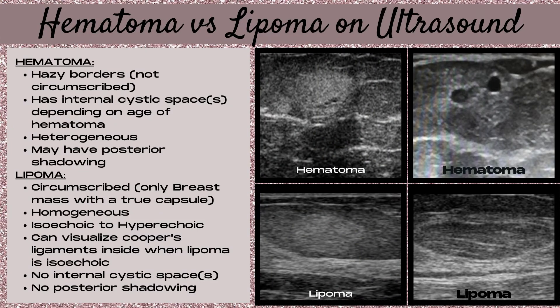Distinguishing a hematoma versus a lipoma on ultrasound: a hematoma will have hazy, non-circumscribed borders, often internal cystic spaces, heterogeneous texture, and may have posterior shadowing. A lipoma, by contrast, is circumscribed — it's the only breast mass with a true capsule. A lipoma is homogeneous in echo texture, isoechoic to hyperechoic, and when isoechoic you can often visualize little white Cooper's ligaments running through it. There are no internal cystic spaces or posterior shadowing associated with a lipoma.